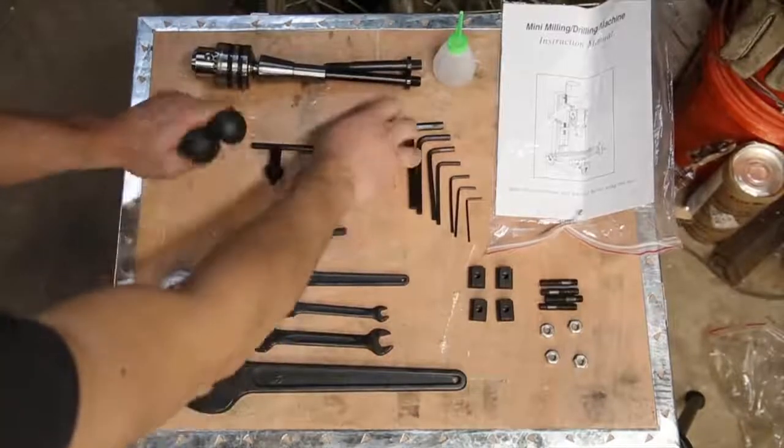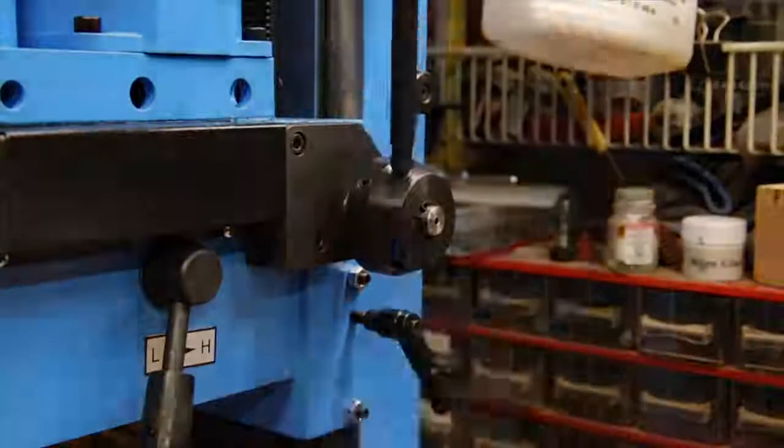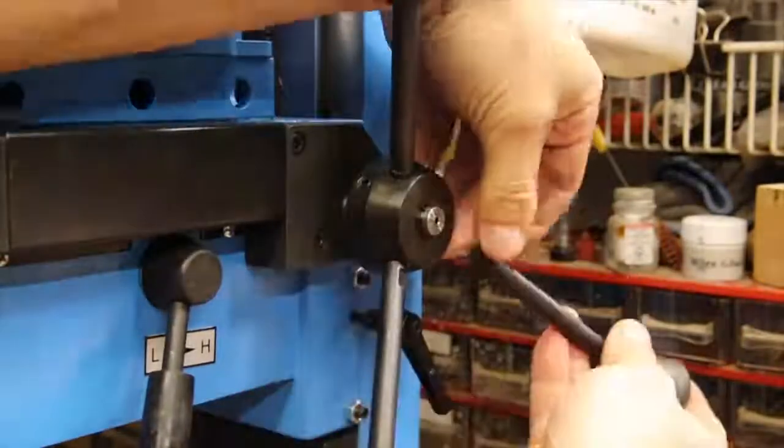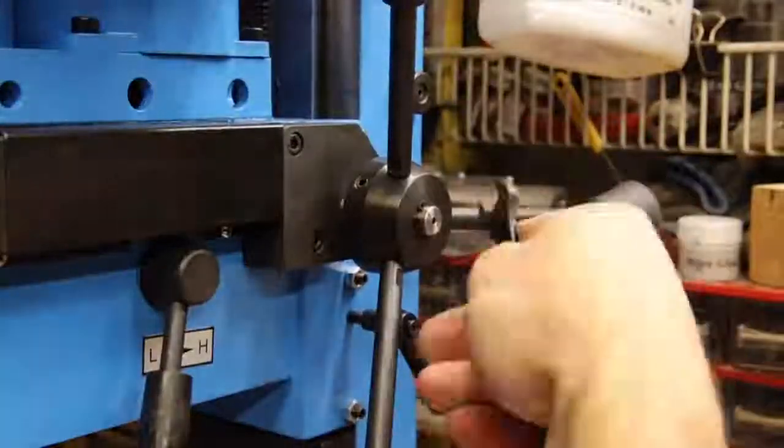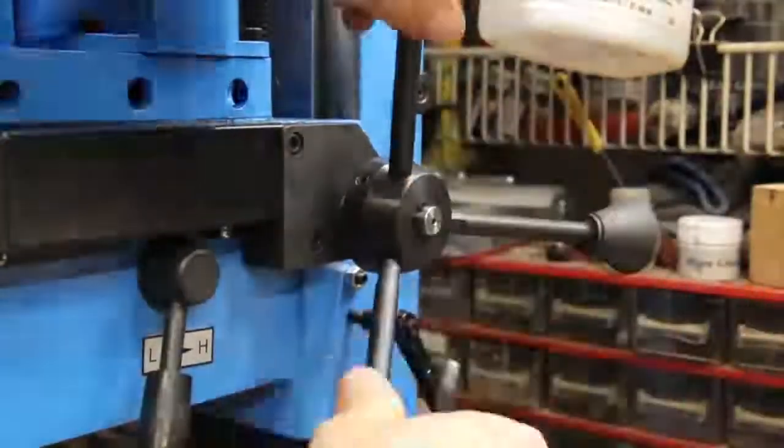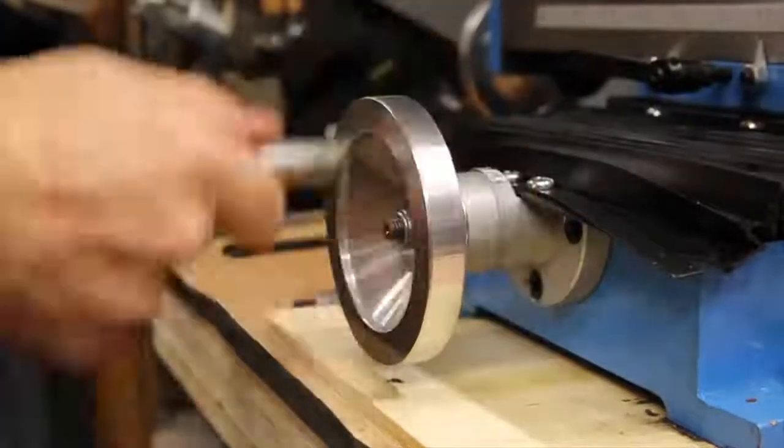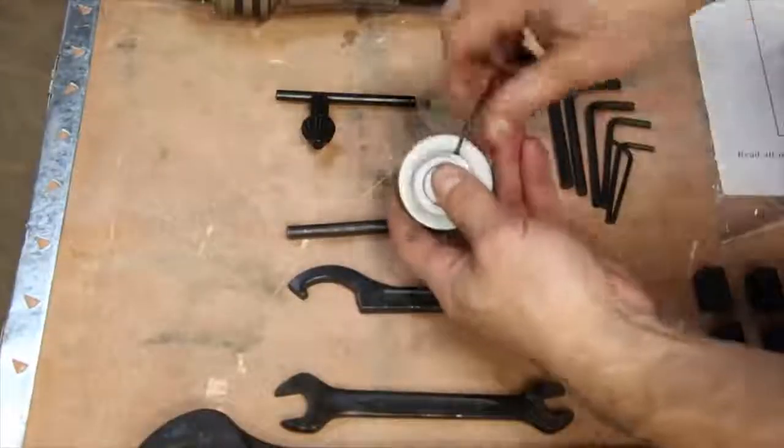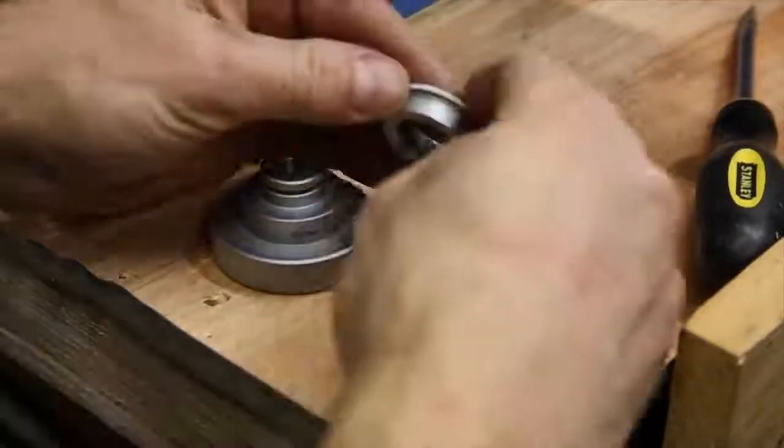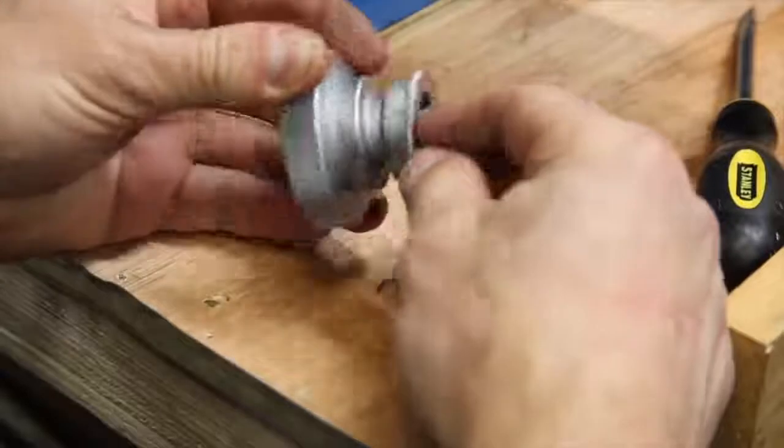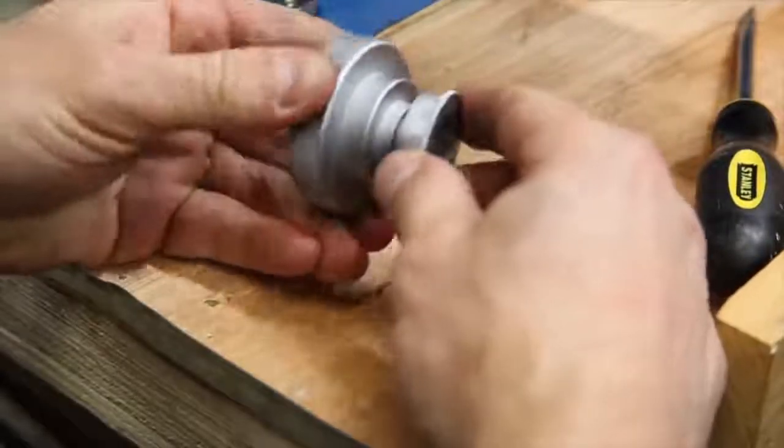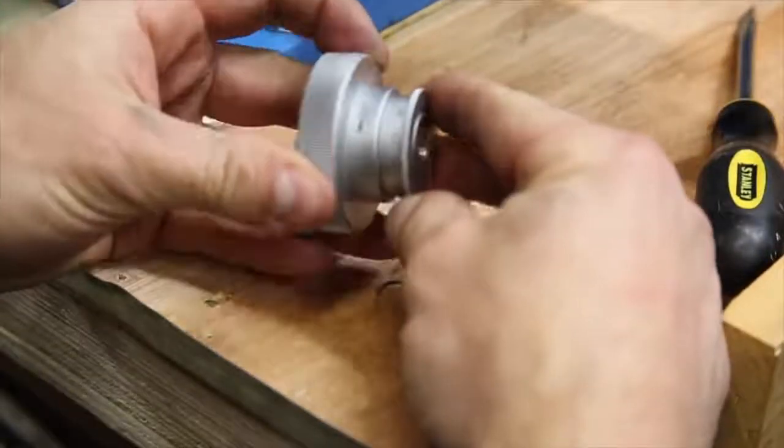The first thing to do is put on all the handles. As a note, don't take the indicator collar off this handle because there's a small spring underneath that goes flying if you do.